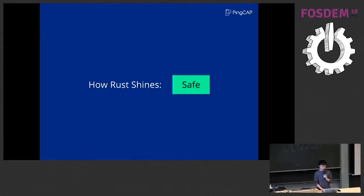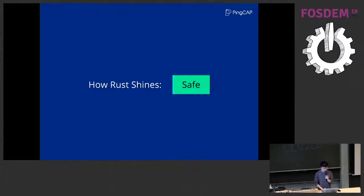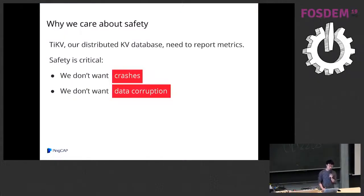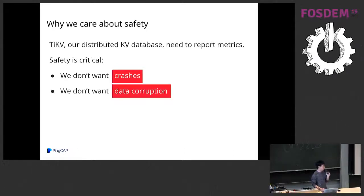So far it looks normal — just a simple metrics library providing recording and encoding features. Next, we'll see how Rust Prometheus provides unique features by utilizing Rust's advantages. First, Rust makes the library very safe. Why do we care about safety? We use Rust Prometheus in TiKV to record and report hundreds of metrics. Safety is critical — we don't want crashes. If TiKV crashes, your service is unavailable. Although TiKV is distributed and fault-tolerant, we want to minimize this possibility and eliminate crashes.